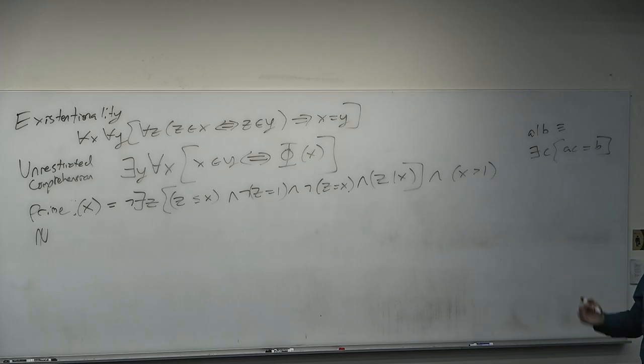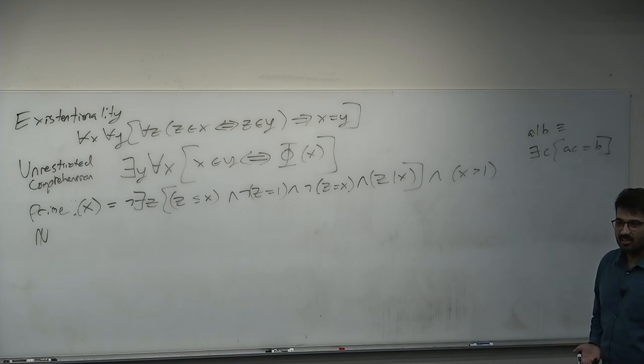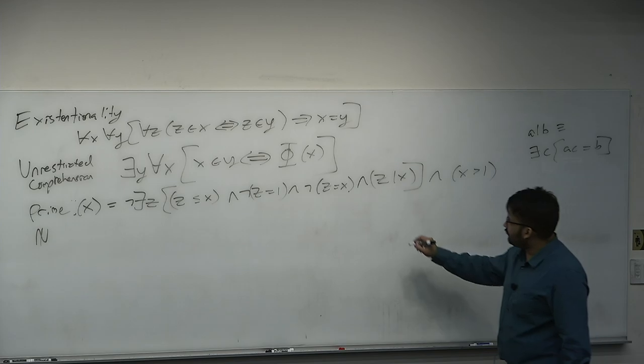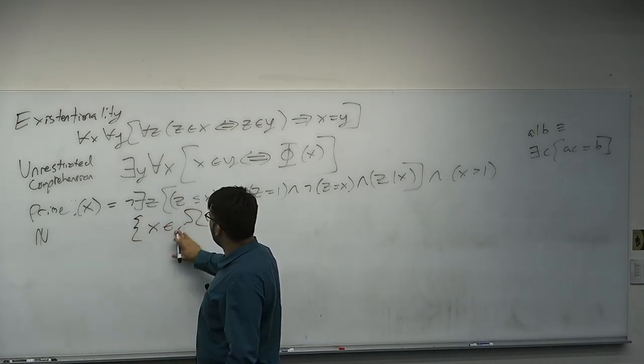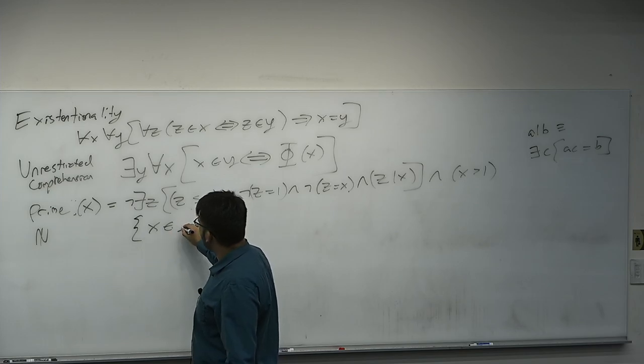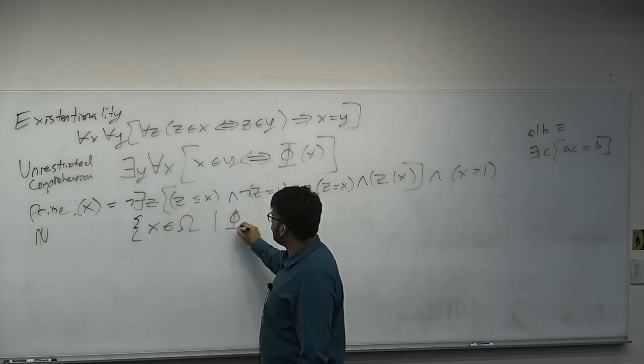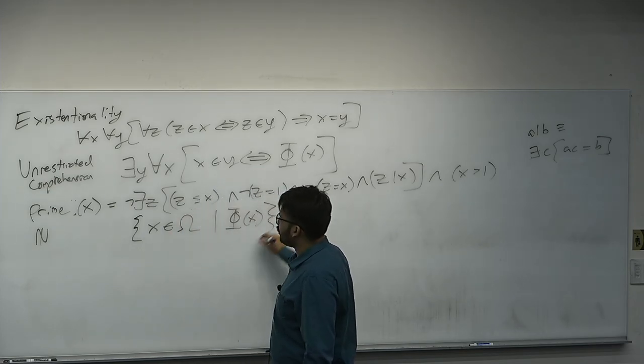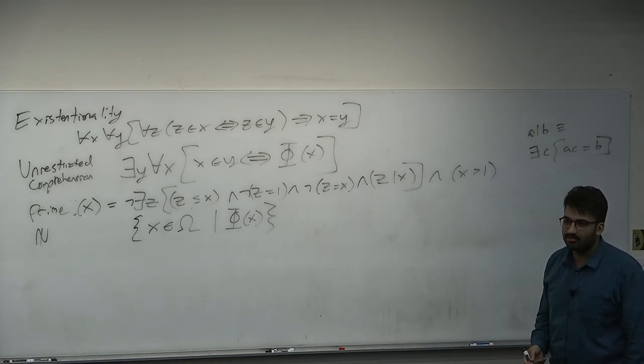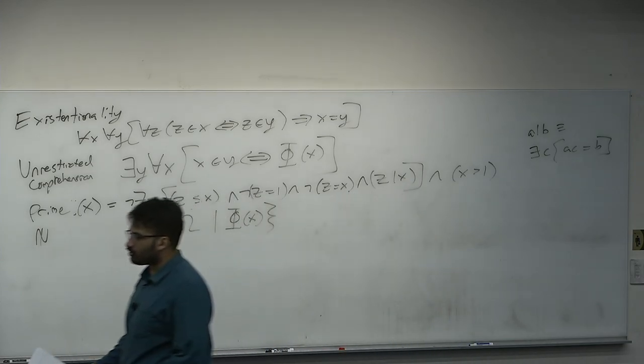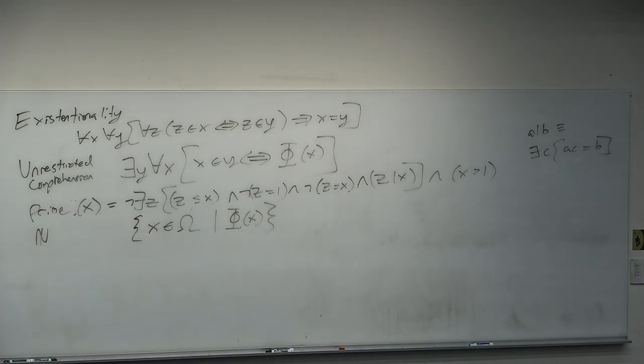Define this to be there does not exist z such that z is less than or equal to x, and it is not true that z is equal to 1, and it is not true that z is equal to x, and z is a divisor of x. Also, x is greater than 1. This is a predicate over the well-formed formulas where the divisor symbol is perhaps defined as multiplication. What numbers satisfy this predicate? Prime numbers. This is a predicate for the prime numbers. Therefore, we may use the axiom of unrestricted comprehension with such a predicate, and we may construct a set of all primes.